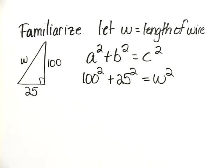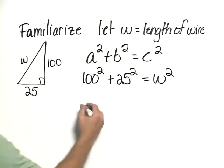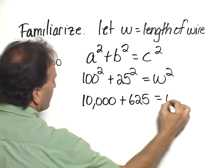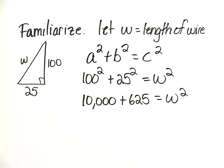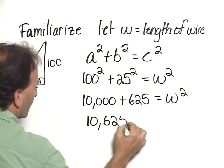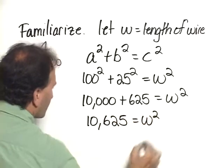Now squaring 100 and then squaring 25, we have 10,000 + 625 = w². Adding together, we have 10,625 = w².